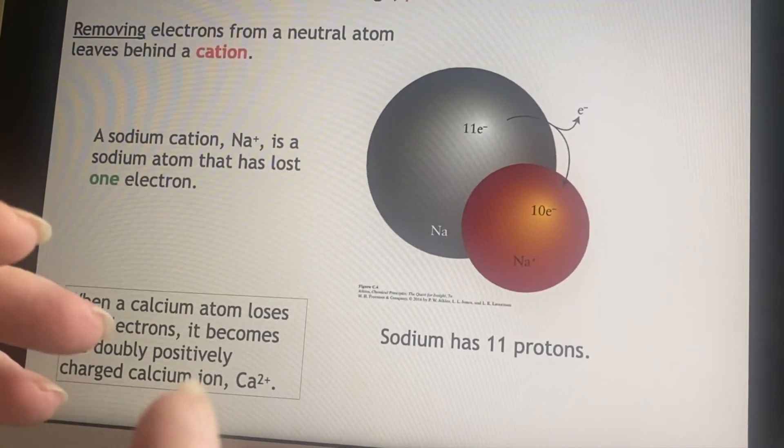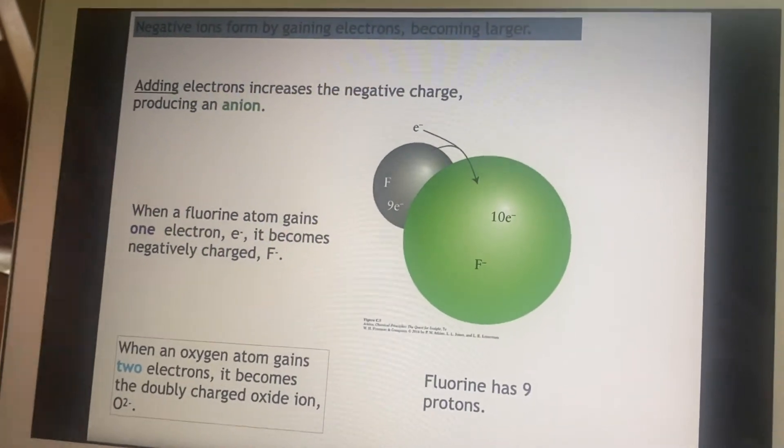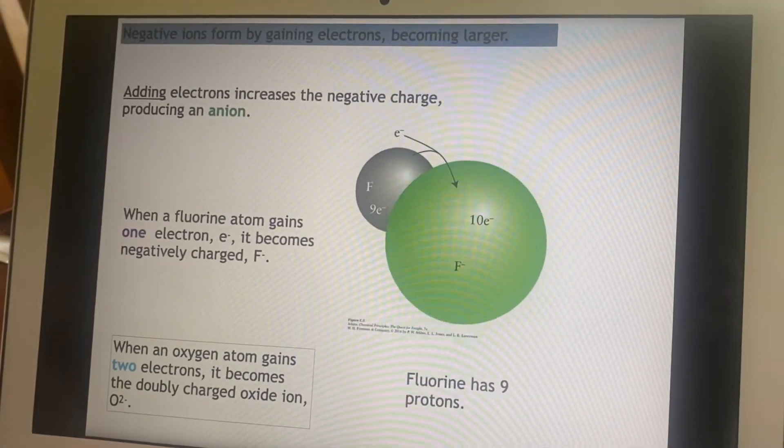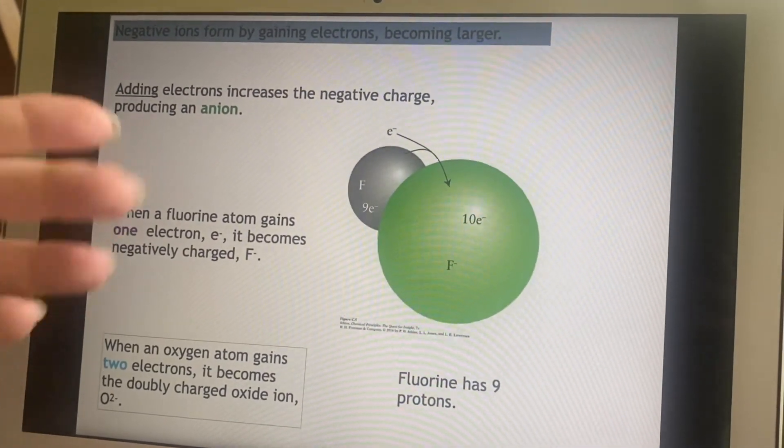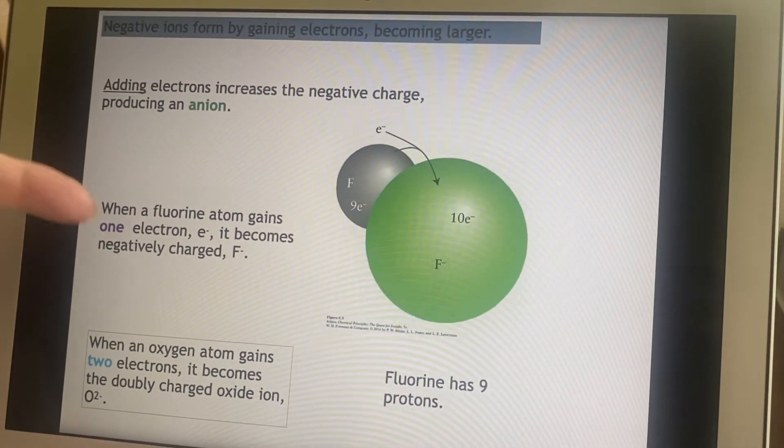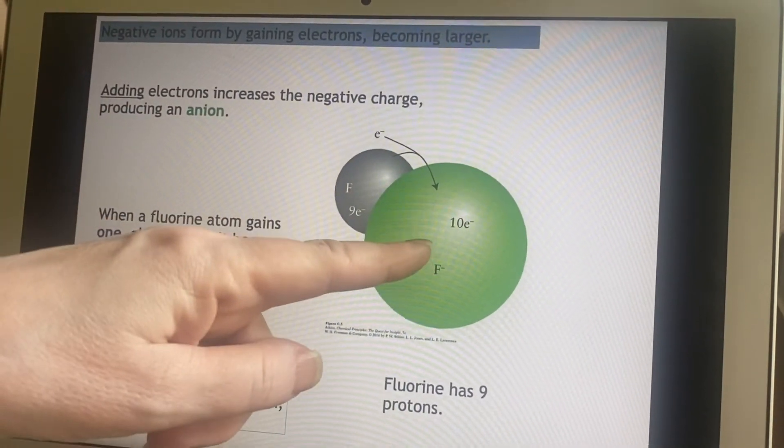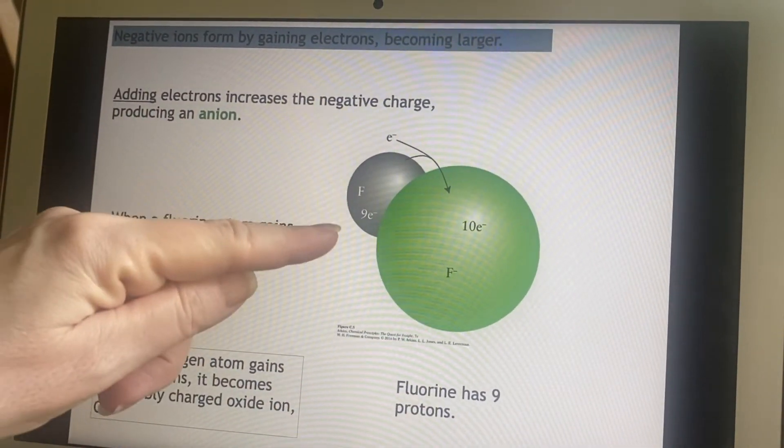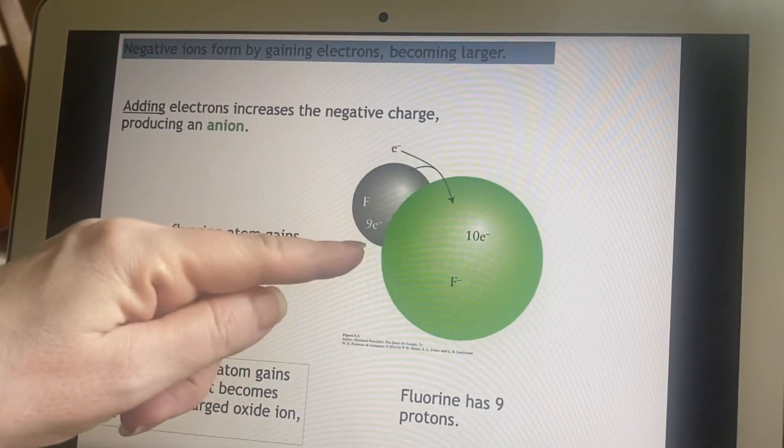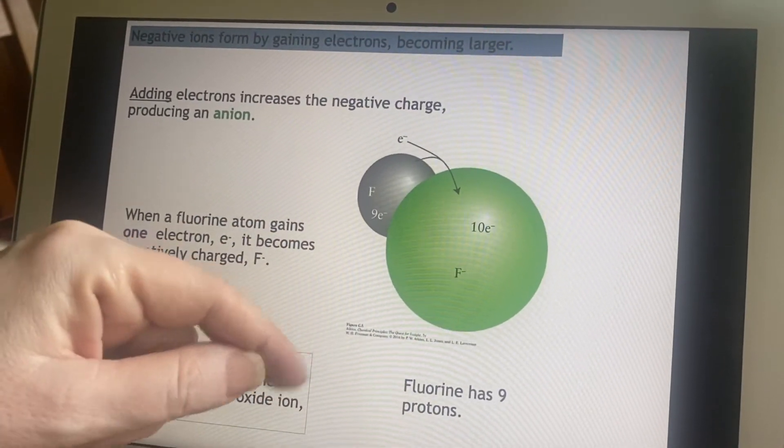We can also talk about the anions, the negative ions. They are going to pick up an extra electron. That's how they become a negative ion. Well, that's going to make sure that you have more electrons than protons, and that will end up increasing the size. This fluorine, for example, had nine protons and it had a certain size. Now there's one more electron than that, and it becomes a bigger ion.